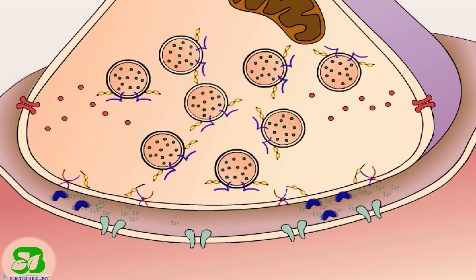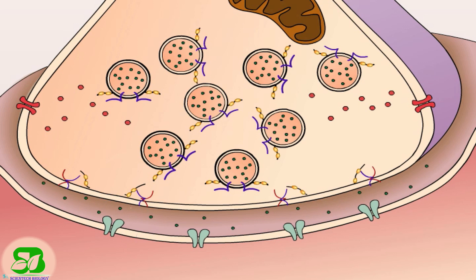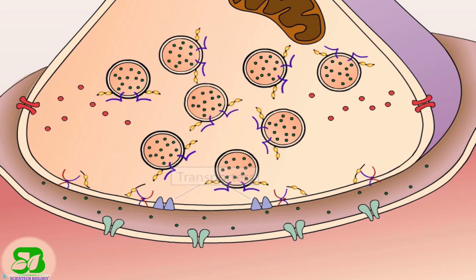The release of transmitter from the receptors causes the channel to close. Not all transmitters are broken down by enzymes in the synaptic cleft. Many transmitters are rapidly cleared from the synaptic cleft by being taken up into the presynaptic terminal by special proteins called transporters. This process is known as reuptake.